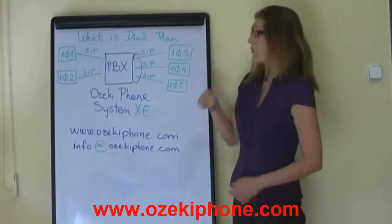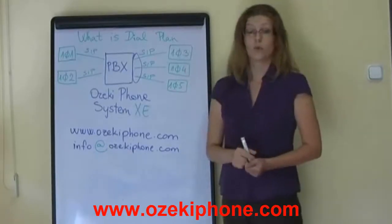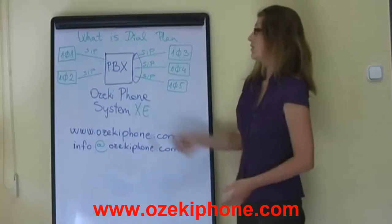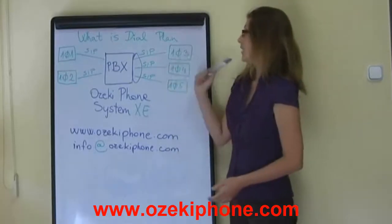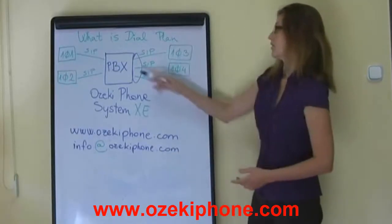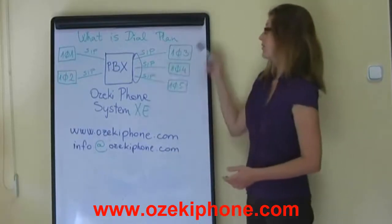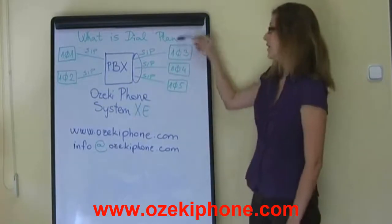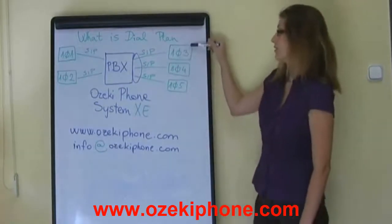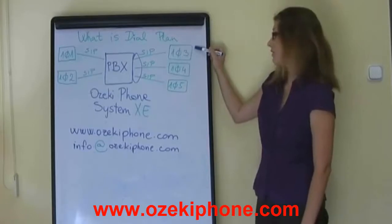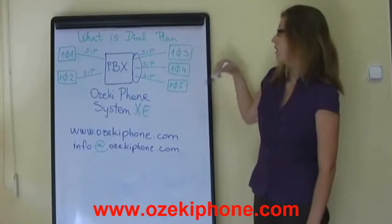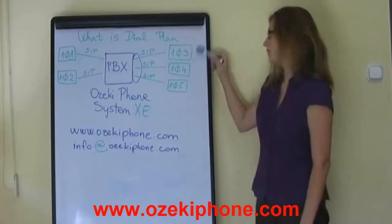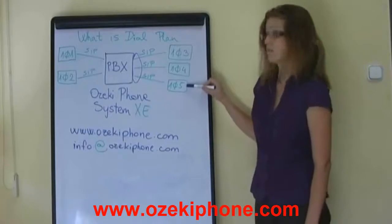Or you can define more complex dialing rules: when you dial 103, the PBX will ring 103 first, but if this extension doesn't answer, it can ring 104, and after that it can ring 105.